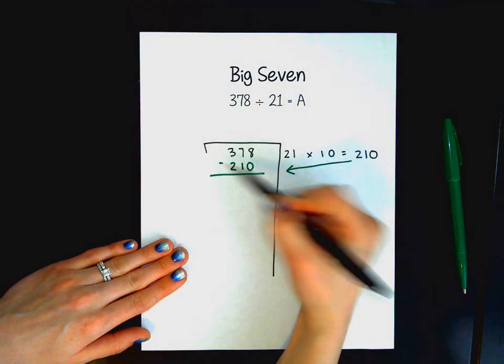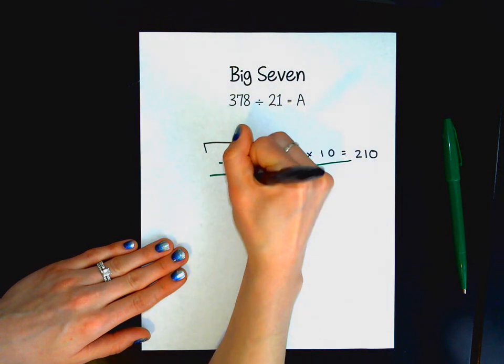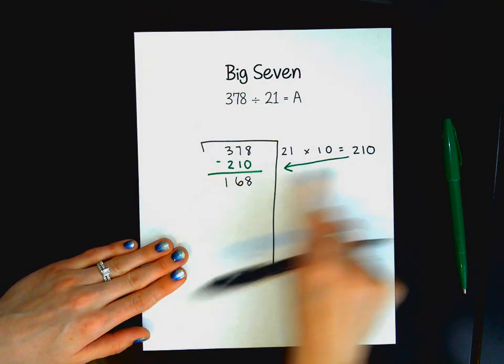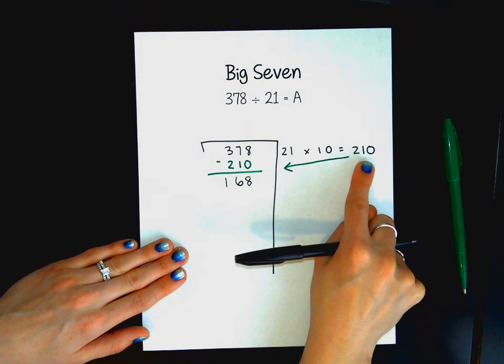So 8 minus 0 is 8, 7 minus 1 is 6, 3 minus 2 is 1. Okay, automatically I look at this number and I now realize that I cannot do 21 times 10 again. So I'm going to need to think of something smaller.